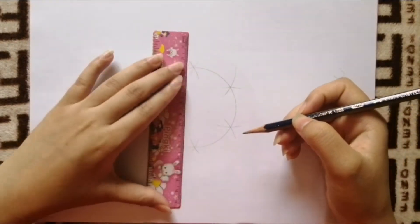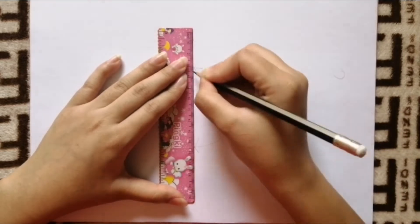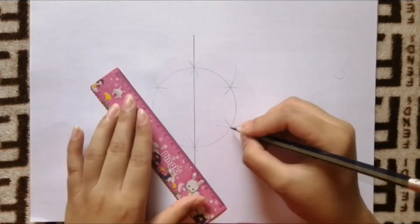Now each cross is a point. So take your ruler and join all the opposite crosses with a pencil.